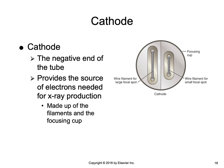The cathode is the negative end of the tube and it provides the source of electrons needed for x-ray production. The cathode is made up of the filaments and the focusing cup, and is connected to two different parts of the x-ray circuit: the filaments are connected to the filament circuit, and the focusing cup is connected to the secondary circuit. Shown here is a front view of the cathode focusing cup with two filaments situated within it — the large focal spot filament on the left is noticeably bigger than the small focal spot filament on the right.